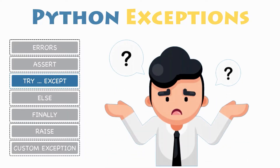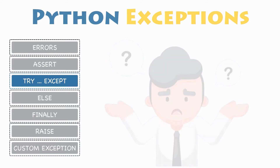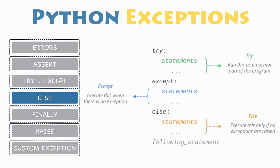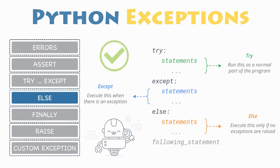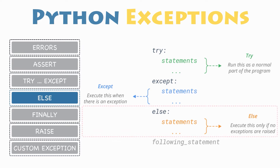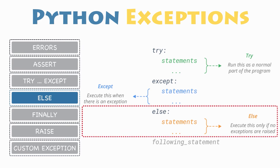How would you execute a block of code only when no exceptions were encountered in the try clause? In some situations you might want to run a certain block of code if the code inside the try clause ran without any errors. For these cases you can use the optional else keyword with the try statement to define a block of code to be executed if and only if no errors were raised.